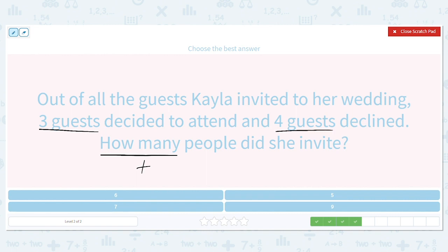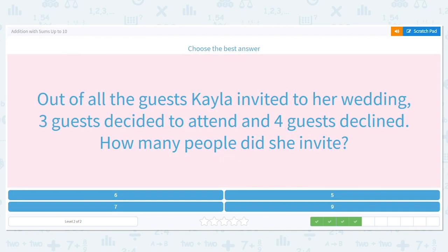What is my addition sentence? Three plus four equals how many? Again, if you're stuck, count on from four, three more, or draw a picture. But three plus four equals seven. So seven people were invited.